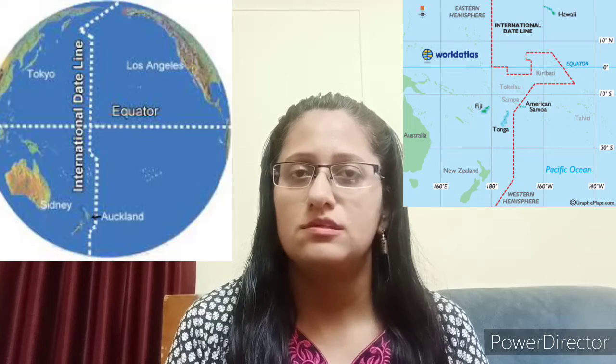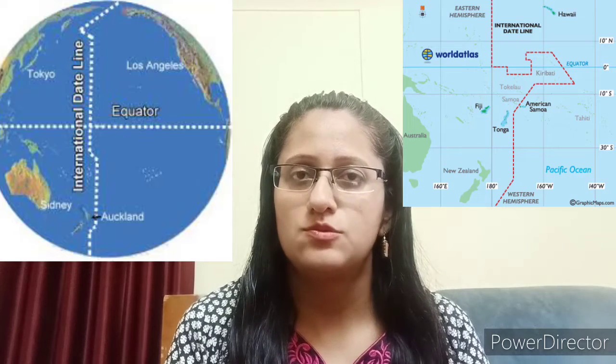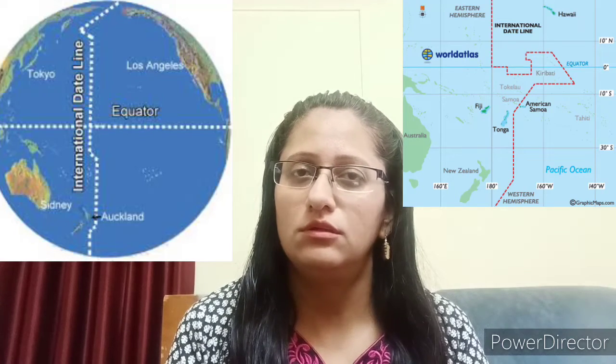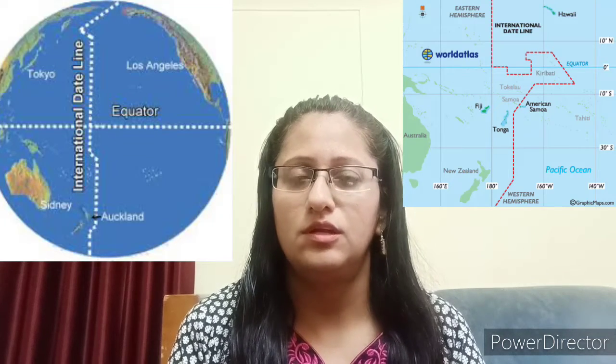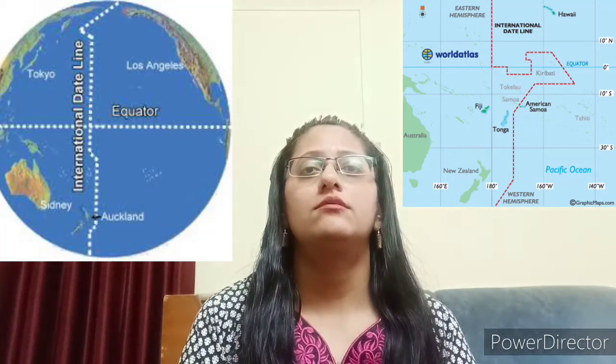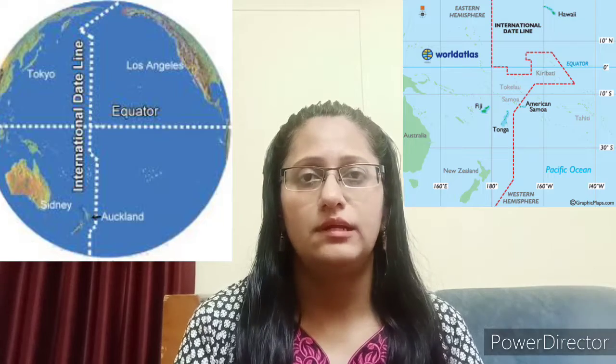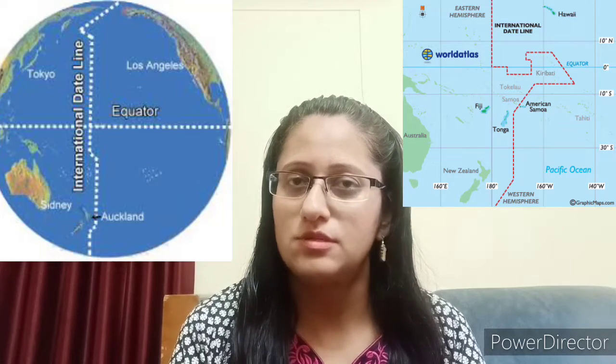If we were to make the International Date Line pass through any other place on the globe, we would not find as much ocean area — it would pass through cities or countries. If the line passed through a city or country, that place would experience two dates in the same day.